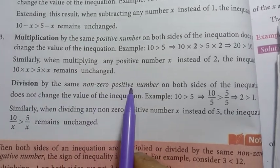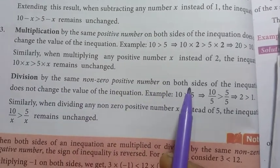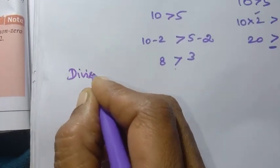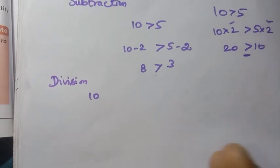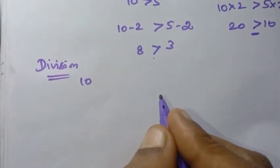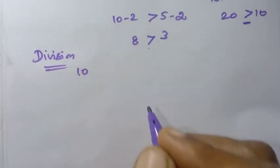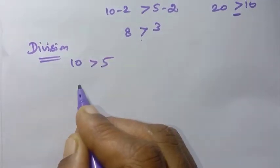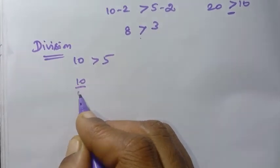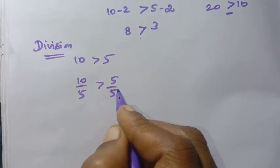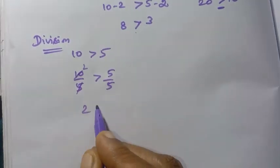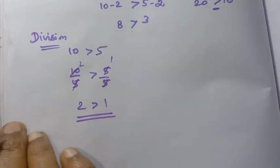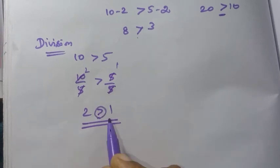4th rule — division: division by the same non-zero positive number on both sides of the inequation does not change the value. Division is the same as multiplication in this regard. For example, 10 is greater than 5. Divide both sides by 5: 10 by 5 is greater than 5 by 5. So 2 is greater than 1. This remains unchanged.